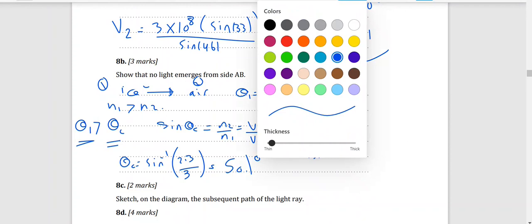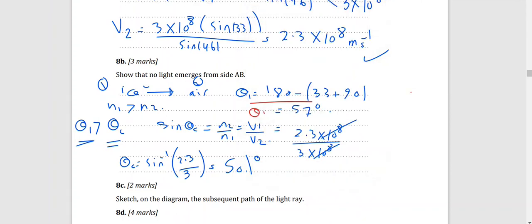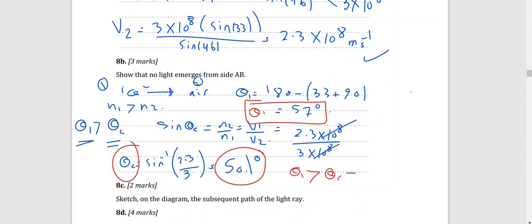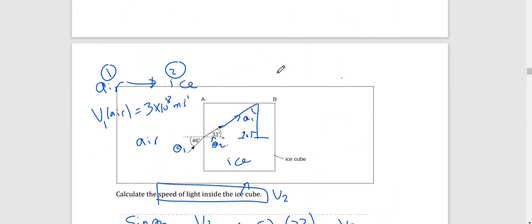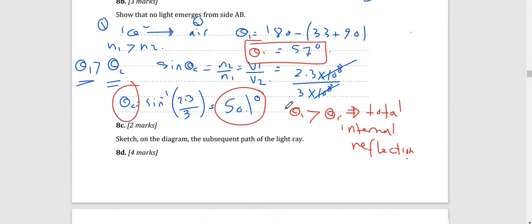Since θ₁ (57°) is greater than the critical angle (50.1°), total internal reflection occurs. Therefore, the light will be totally internally reflected inside the ice itself and will not pass through to side AB — which is exactly what we needed to prove: no light emerges from side AB.